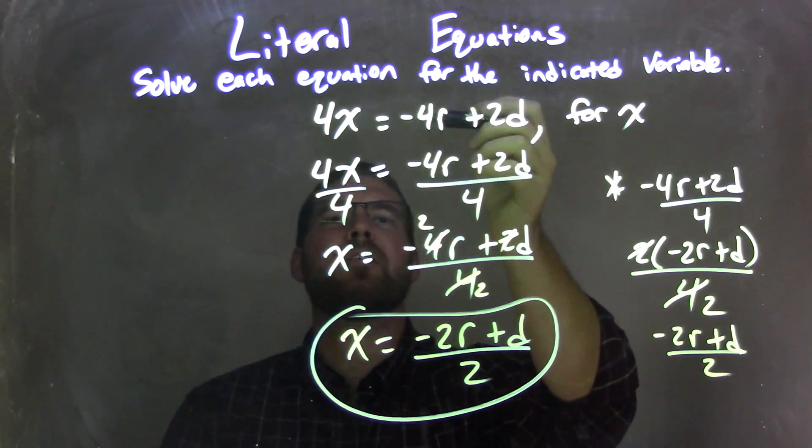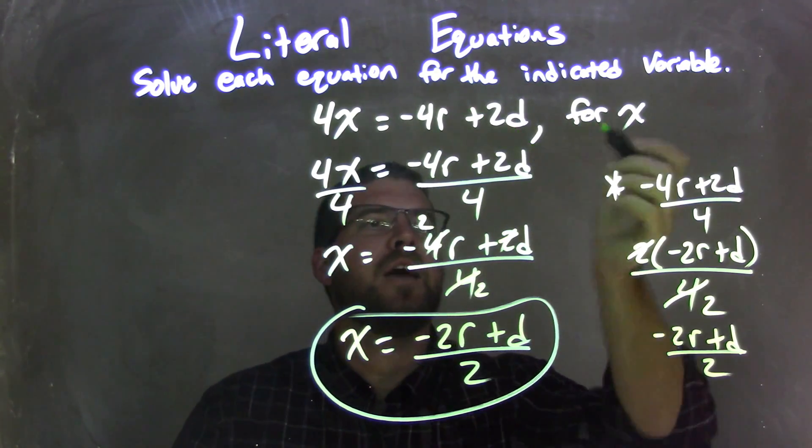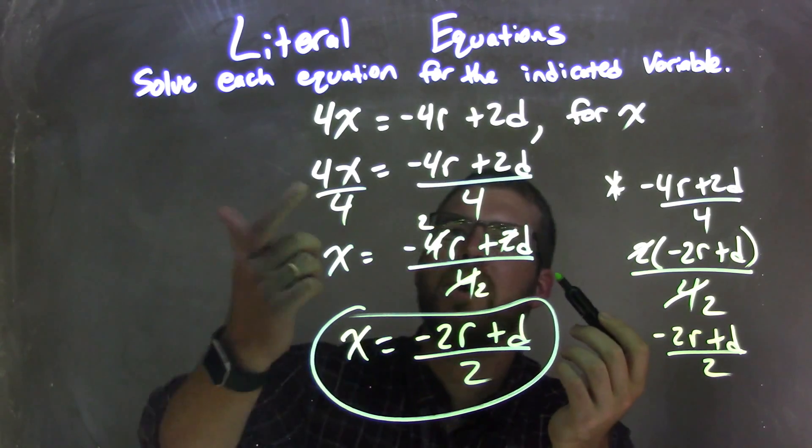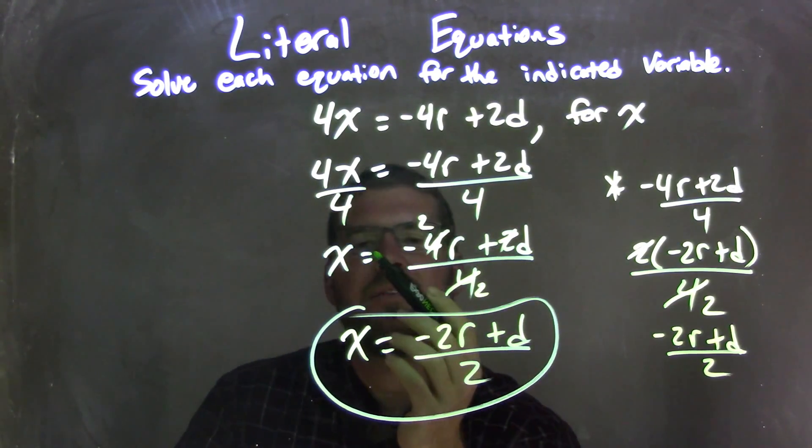So let's recap. We were given 4x equals negative 4r plus 2d, and we're solving that for x. I rewrote my equation here, and all I did was divide by 4 on both sides to get x by itself.